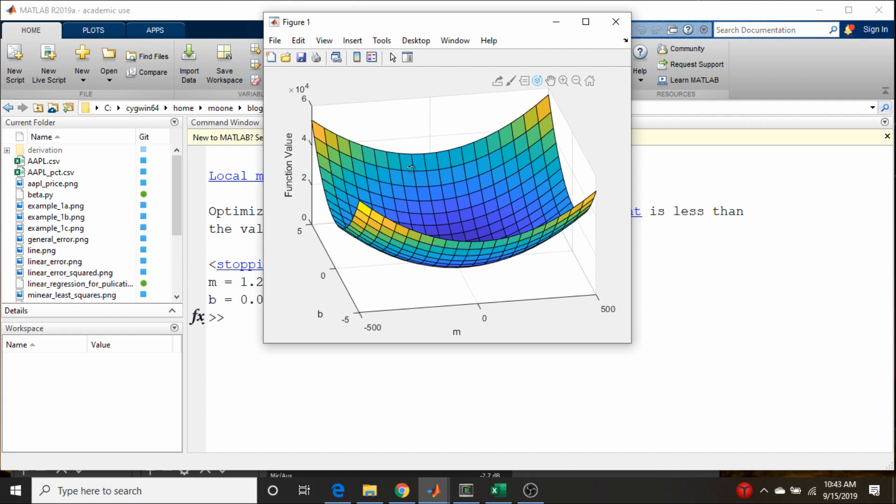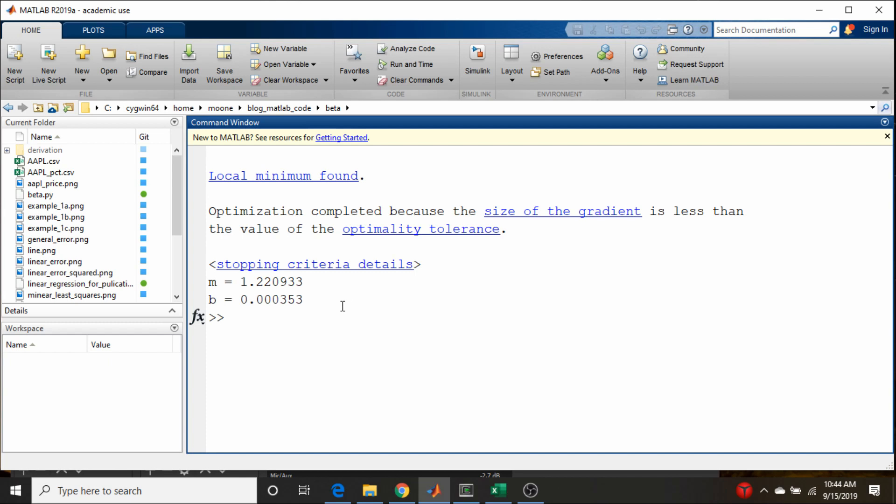So we want to find where that minimum is. That's the value that gives us our best fit parameters. So I actually had MATLAB print out these minimum values here. Now this was calculated just via a built-in nonlinear minimization routine in MATLAB,